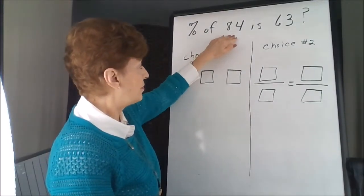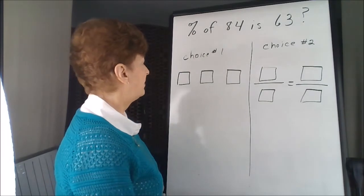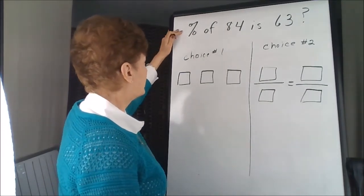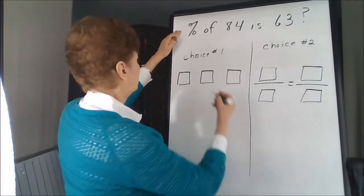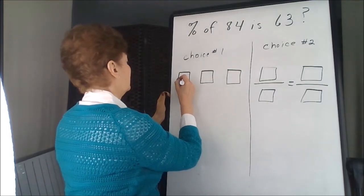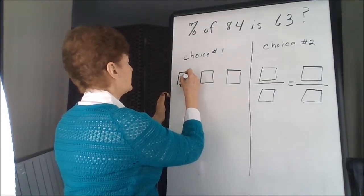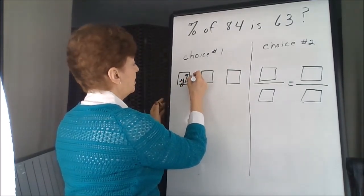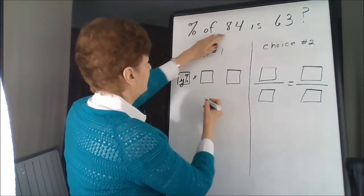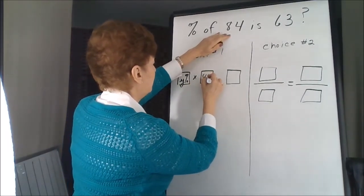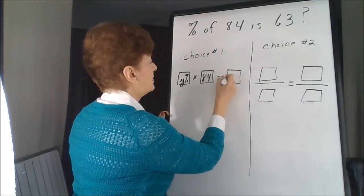What percent of 84 is 63? The percent we don't know, that's our x or our y. Y percent of means times, 84 is after the of, 63 is after the is.